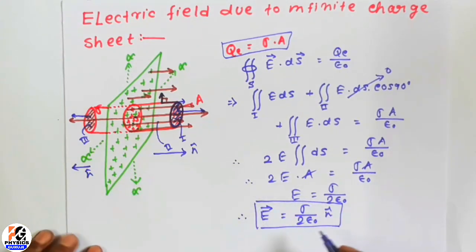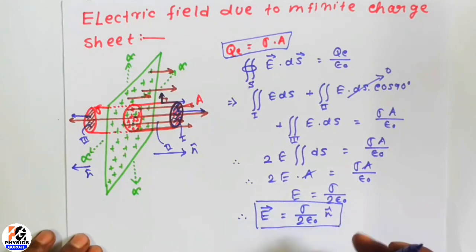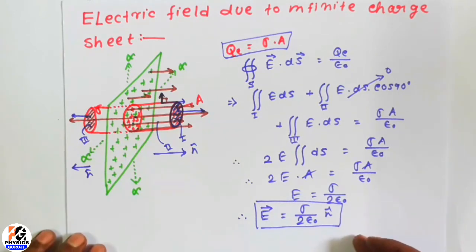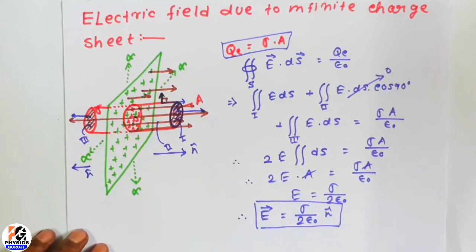So this is our result — the electric field due to an infinite charge sheet is E = sigma / 2 epsilon naught. Thank you for watching. Please subscribe to my channel and like and share the video.